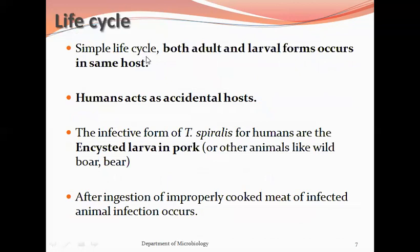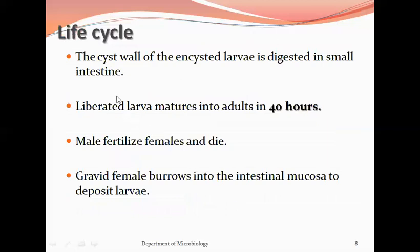Trichinella spiralis has a simple life cycle where both adult and larval forms occur in the same host. Humans act as accidental hosts. The infective form for humans is the encysted larvae in pork. After ingestion of improperly cooked infected meat, the cyst wall of the encysted larvae is digested in the small intestine and larvae are released. These liberated larvae mature into adult worms within the next 40 hours. The males and females develop, and the male fertilizes the female and then dies.